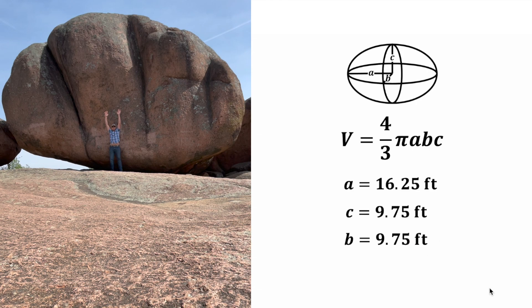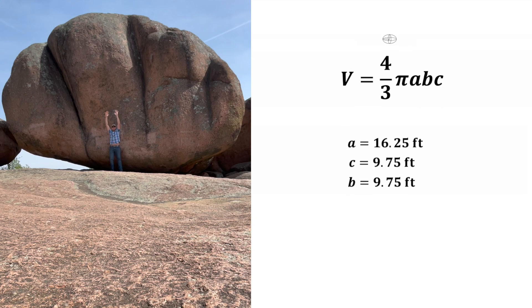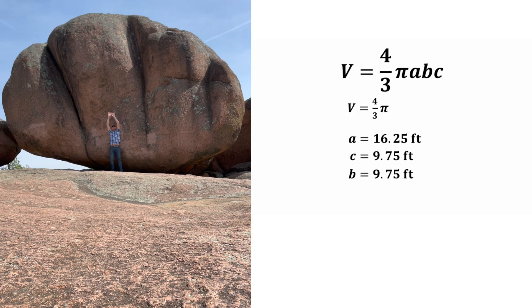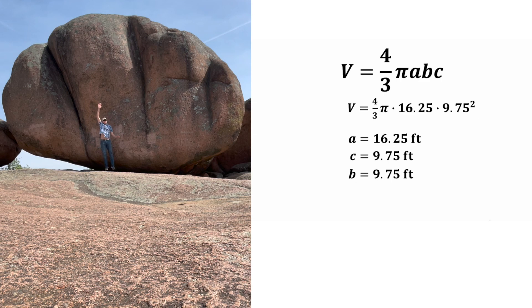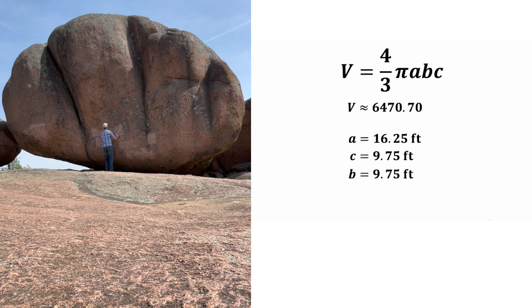Let's scoot these over, give them a label of feet, and let's calculate what we're doing here. So the volume is equal to 4 thirds pi times A, which is 16.25, times B, which is 9.75, and then times C, which is another 9.75, so I'm going to square it. After we do all these calculations, we get approximately 6,470.70, and that'll be cubic feet.